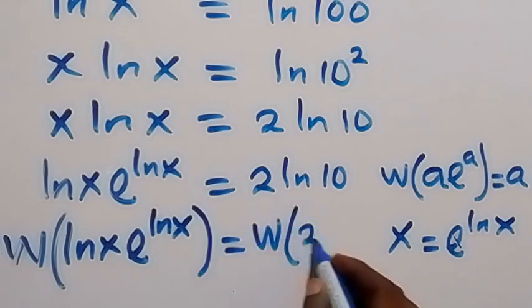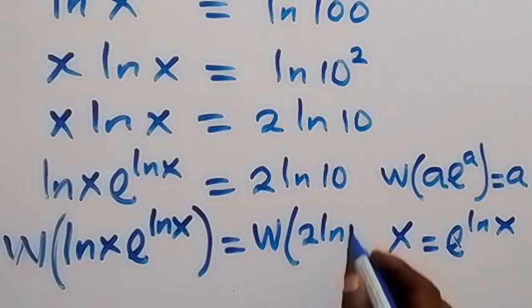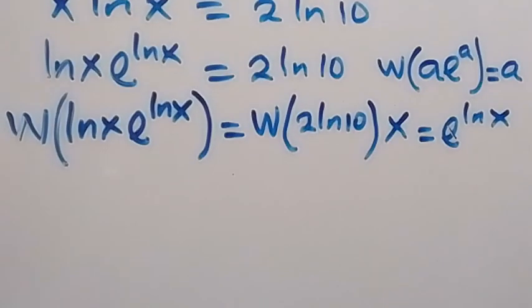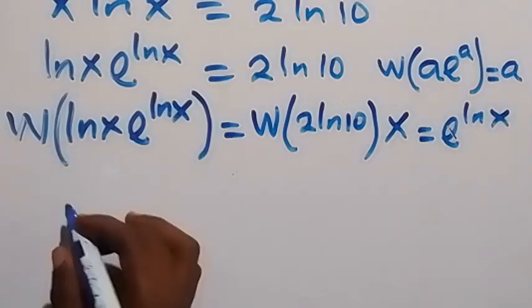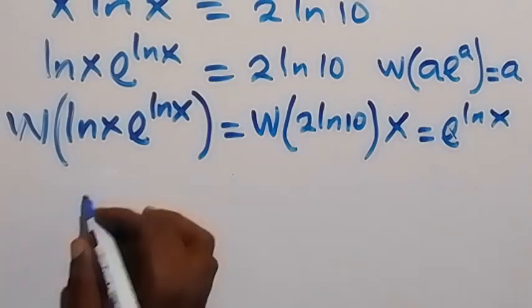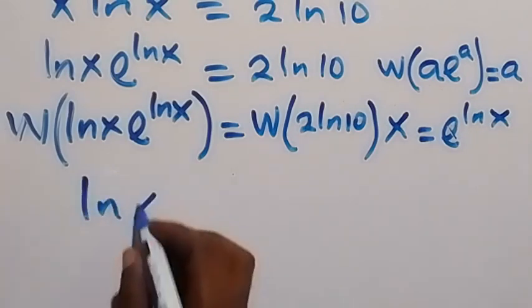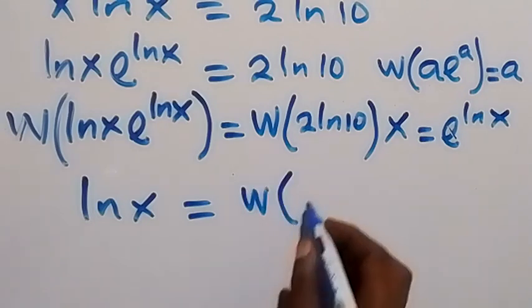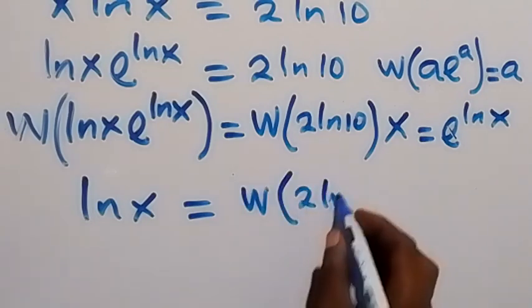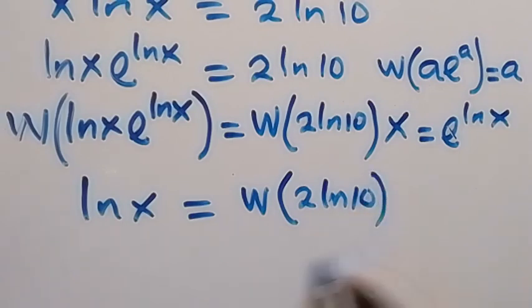...into bracket 2 ln 10 on this side. Then in the next step, this W ln x exponent ln x will reduce to ln x. From that, then we have ln x here, which equals to W into 2 ln 10.